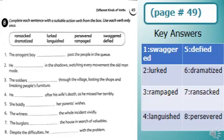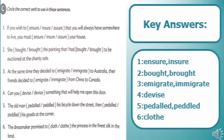Key answers are also mentioned for more understanding. Dear students, circle the correct word to use in these sentences. Number one: If you wish to ensure that you will always have somewhere to live, you must insure your house. 'Ensure' means make sure; 'insure' means insurance.